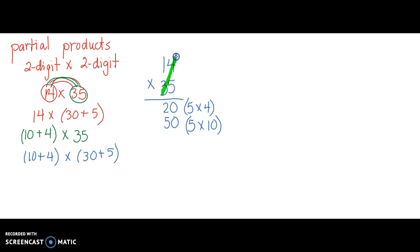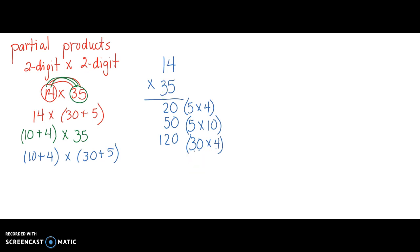Next, let's move to the tens place: the 3 in the tens place times the ones place 4. That would look like 30 — 3 in the tens place is 30 — times 4 in the ones place. 3 times 4 is 12, and we're multiplying by a product of 10, so that gives us 120. Then let's take our tens place and multiply times the tens place: 30 times 10. We know 3 times 1 is 3, and we have a product of 10 times 10, giving us 300.